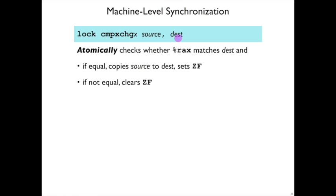So the way compare and exchange works is there's an implicit argument not here, which is RAX. RAX is always involved with this, so there's three arguments, really.